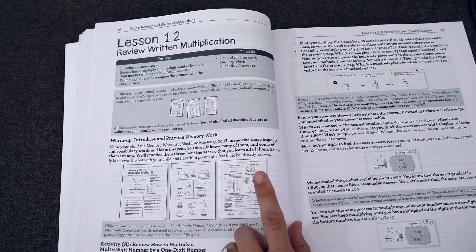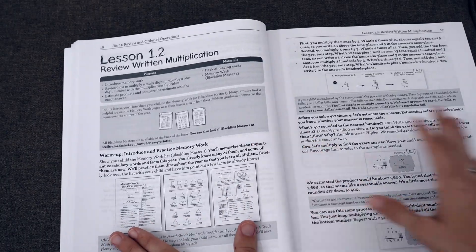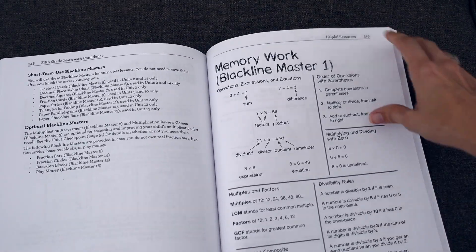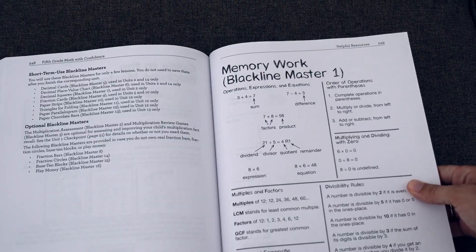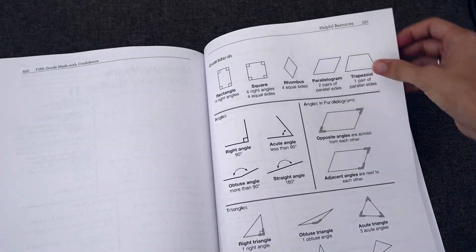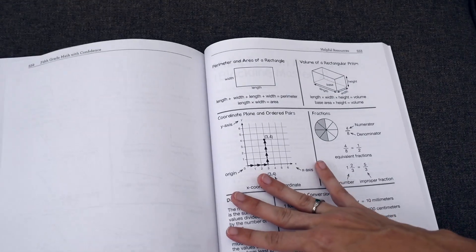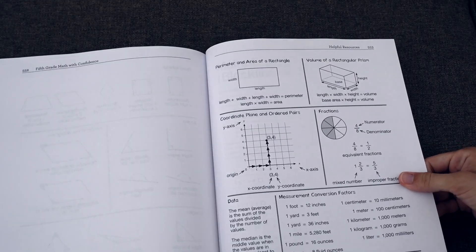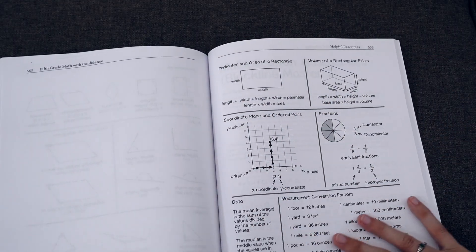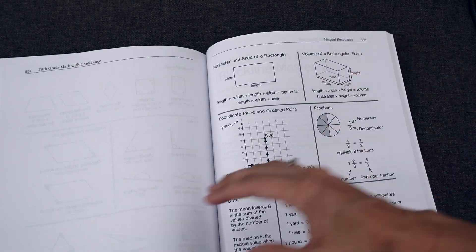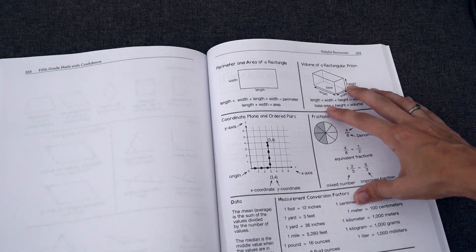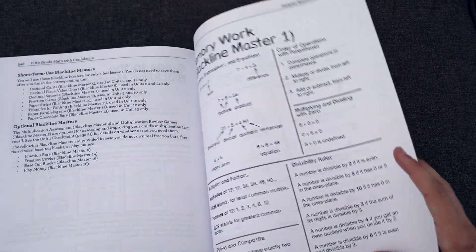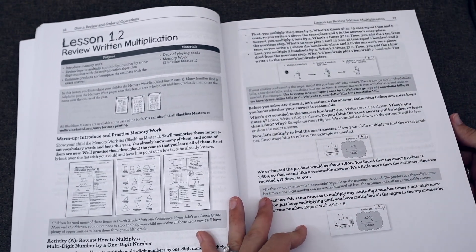Another key thing I want to point out is memory work. They have in the Black Line Masters a memory work master list. And this is definitely something that I recommend printing or copying. They suggest that you could post this on a wall near your student's work area or put it in your student's master binder. These are vocabulary and concepts that your student is intended to memorize. And every day you have just a really quick memory work drill to introduce your lesson.